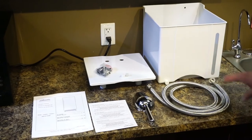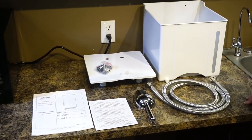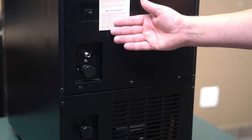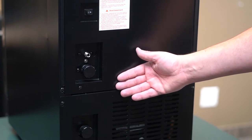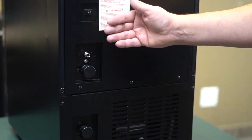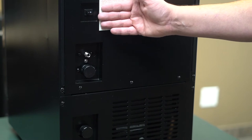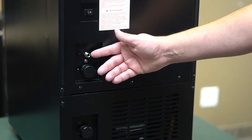On the back of the unit before you go through the install process is the pump switch which comes in the off position, the water inlet, drain pump outlet, and the continuous drain outlet.